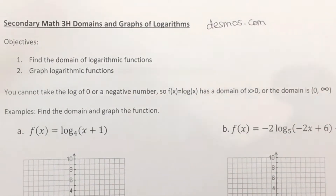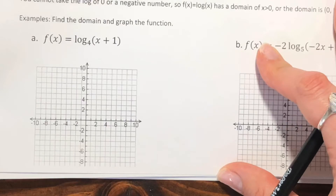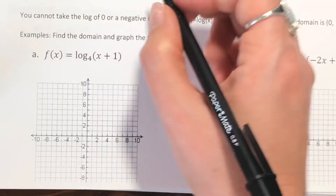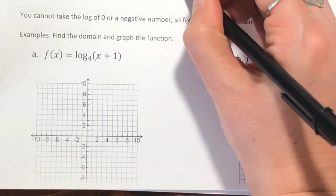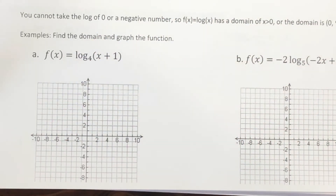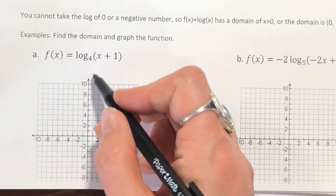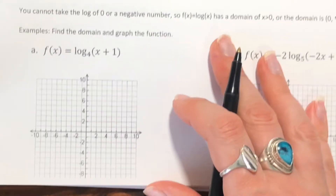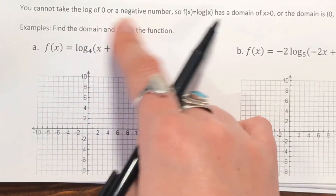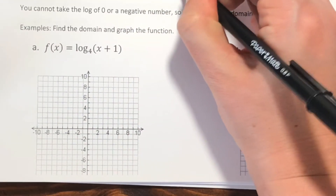We are going to look at how to actually do them by hand as well. One thing to remember when looking at graphs of exponentials and logarithms is they do have those asymptotes. With log functions, we have that vertical asymptote, so y has to be greater than zero — meaning we can't use the left part of our graph. You cannot take the log of zero or a negative number. So x needs to be greater than zero.